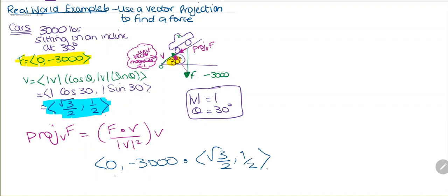And this is all over our unit vector v, which is 1 squared. And it is multiplied by v, which is 1.